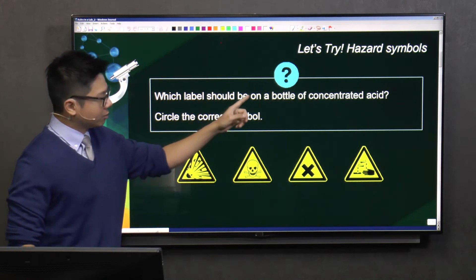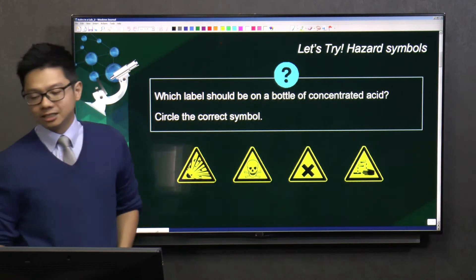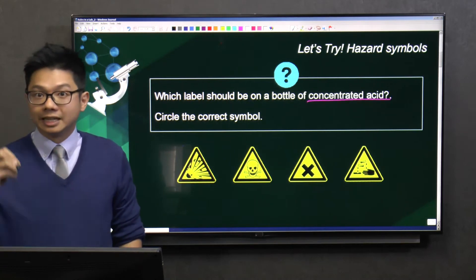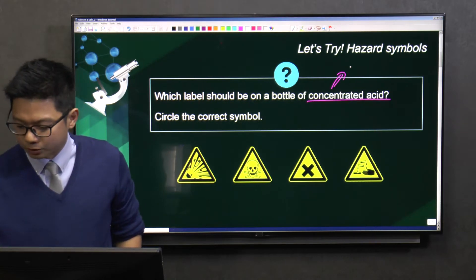Which symbol should be on a bottle of concentrated acid? The key word here is concentrated acid, and acids are corrosive.